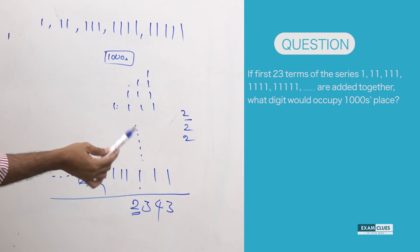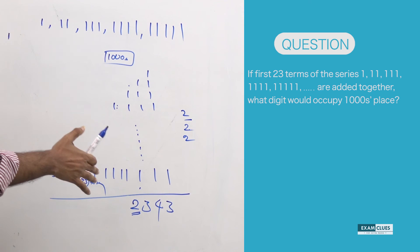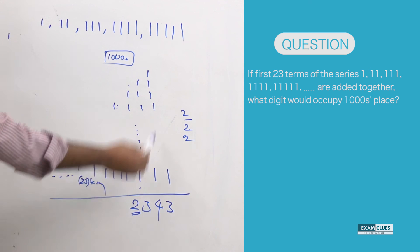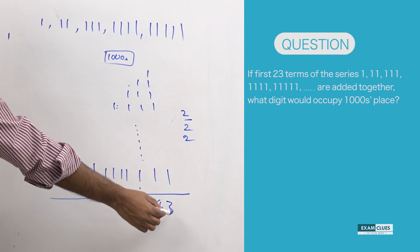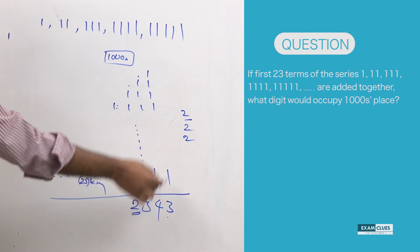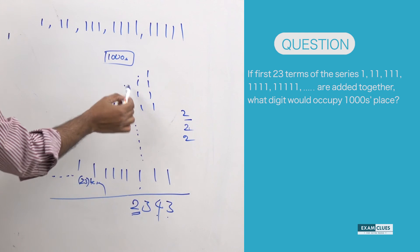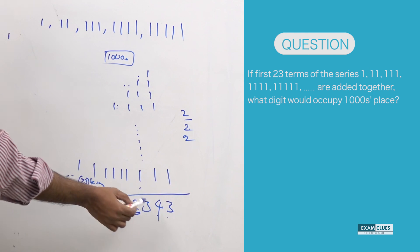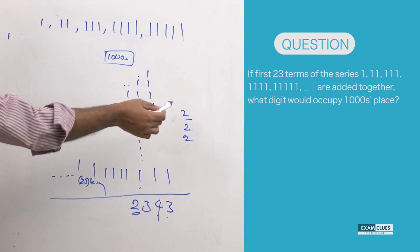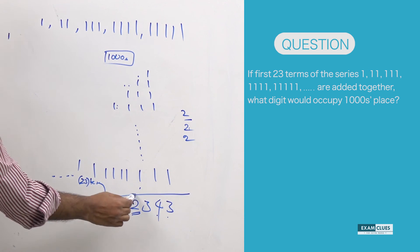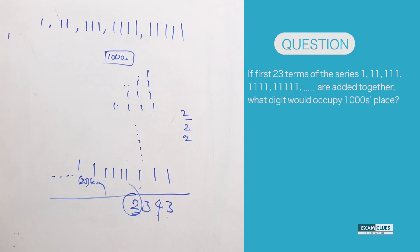To summarize: we only need to worry about the sum up to the thousands place. Units column: 23 ones → 3, carry 2. Tens column: 22 + 2 = 24 → 4, carry 2. Hundreds column: 21 + 2 = 23 → 3, carry 2. Thousands column: 20 + 2 = 22 → digit is 2. We'll be coming up with more interesting and complex questions and smart ways of solving them in upcoming episodes. Stay tuned!